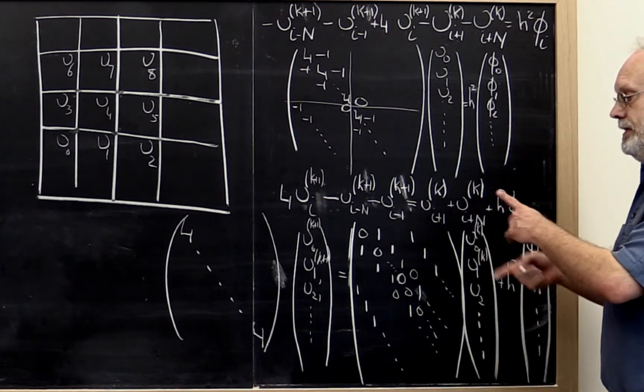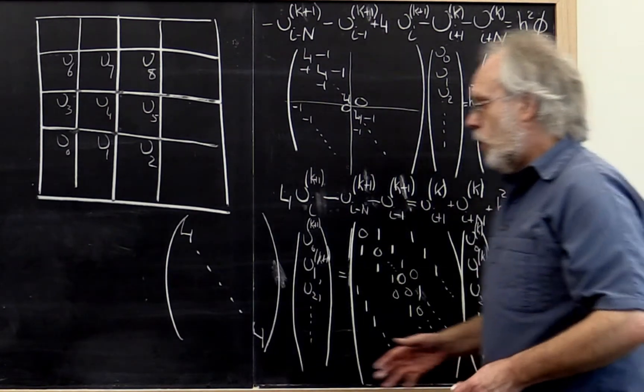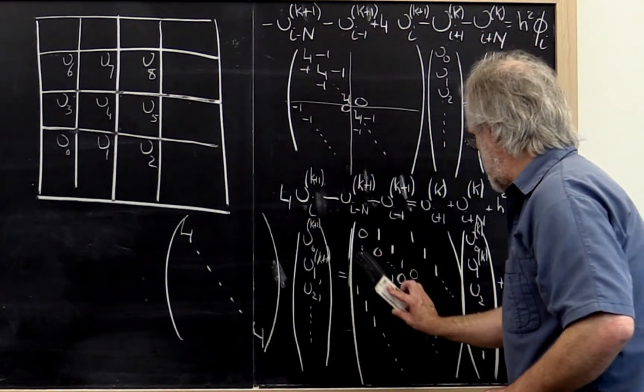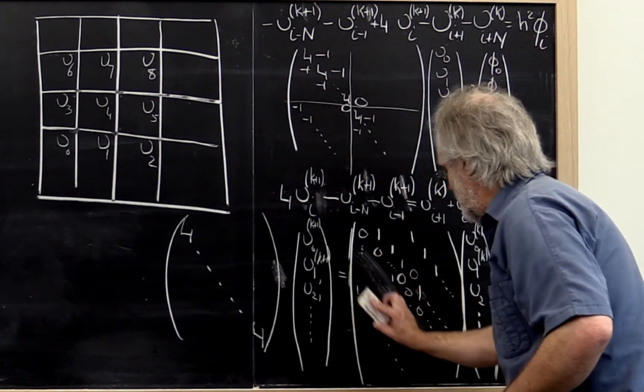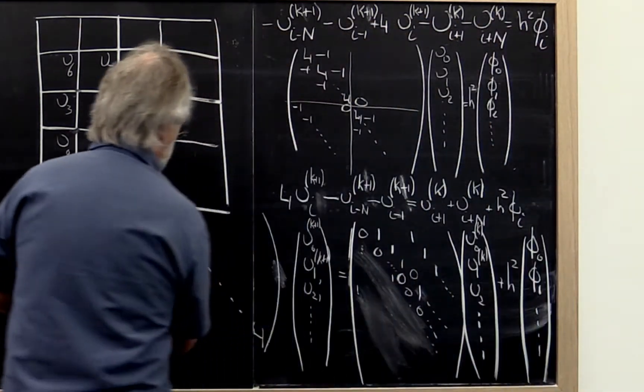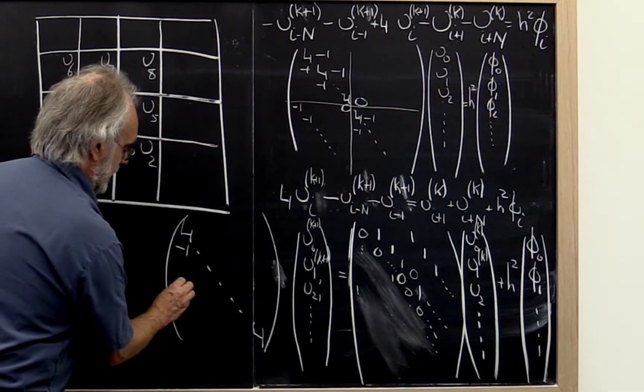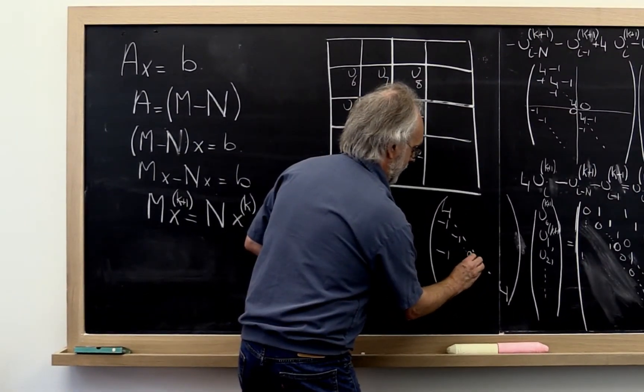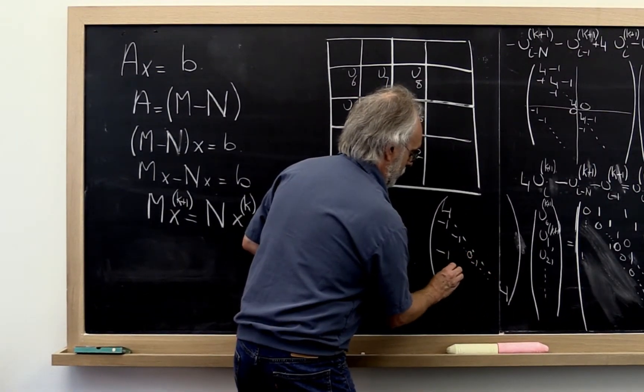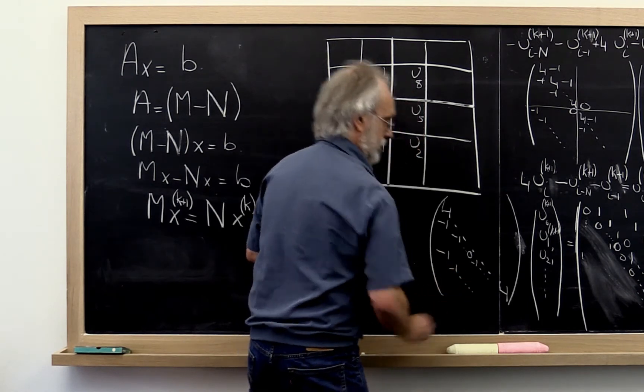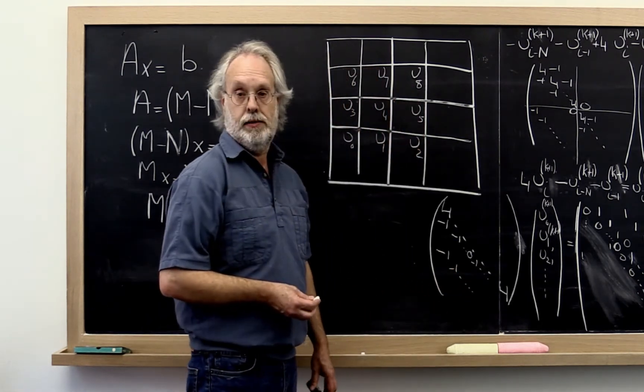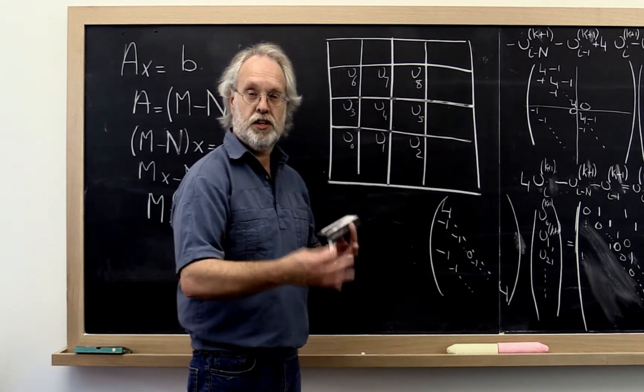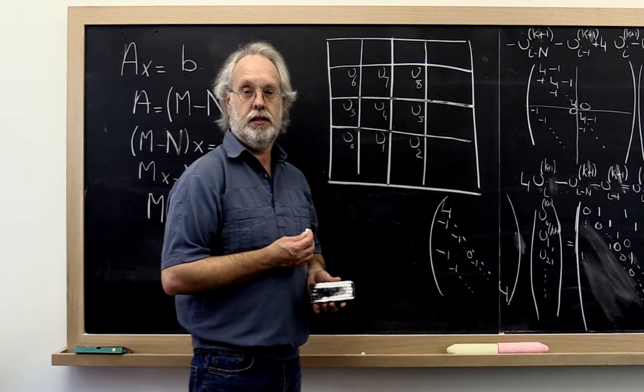And if you work out the details of this, what that means is that we take away all of these sub-diagonal entries and we move them back to the left-hand side. Right here. And you may want to look at the notes and kind of contemplate the details.